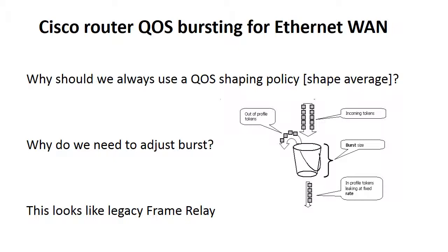I haven't seen anything on the web about why we use different burst rates. Most posts just say to go with the default. But the first thing to remember is this is not legacy frame relay. The terminology and commands look very similar, but we're not bursting over our purchased bandwidth or bursting up to or at the CIR.